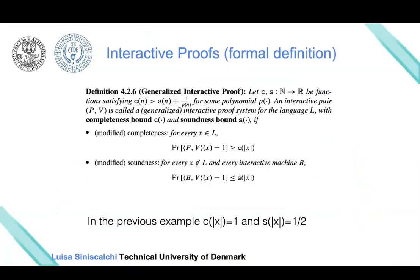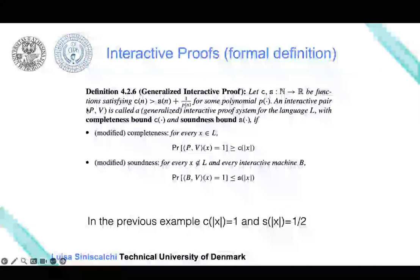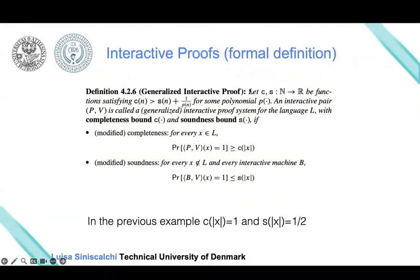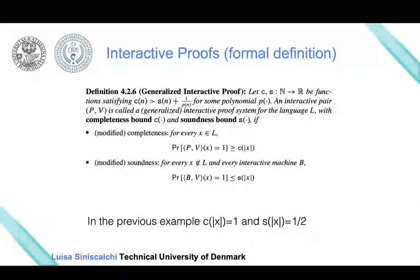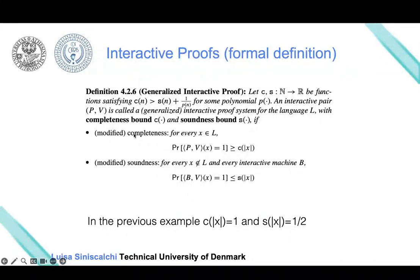I want to give you a more formal definition of what we've been discussing about interactive proofs. They are defined using two objects—the prover and the verifier—with respect to some NP language. An NP language can be, for instance, graph isomorphism or graph non-isomorphism. We can have multiple instances of this language, such as the graphs G and H from our examples. These instances are defined with X. We have two properties: completeness and soundness.